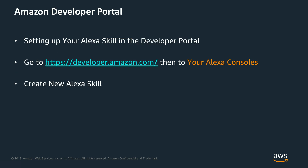We need to have an account in Amazon Dev Portal in order to start configuring the Alexa skill. We're going to go to developer.amazon.com, then go to Alexa consoles and start creating and configuring our skill.